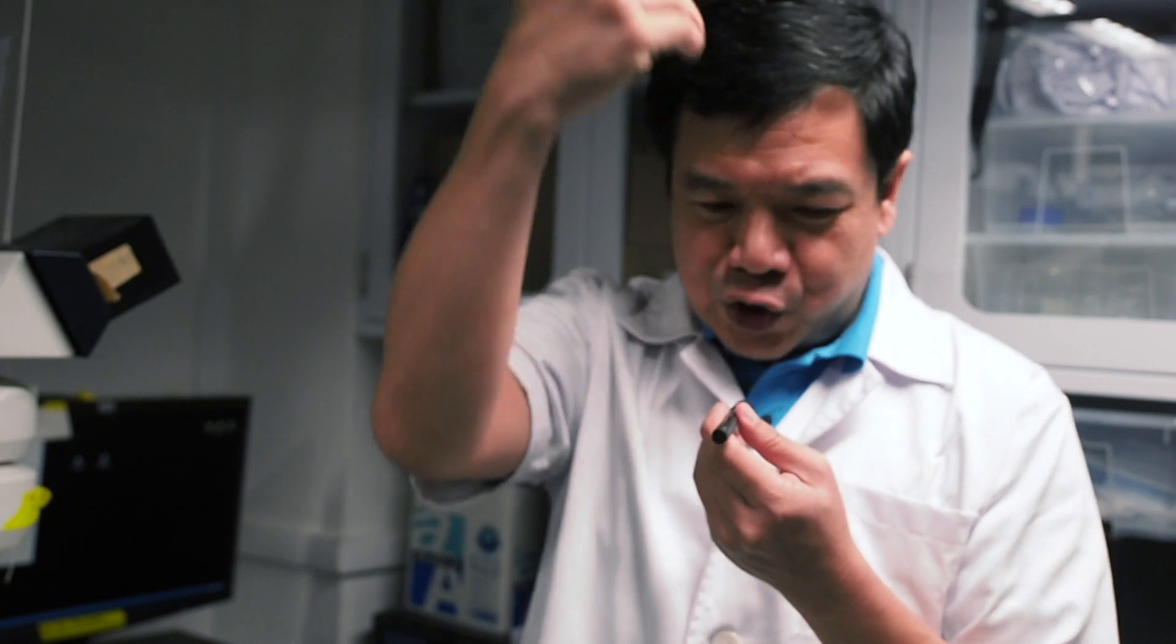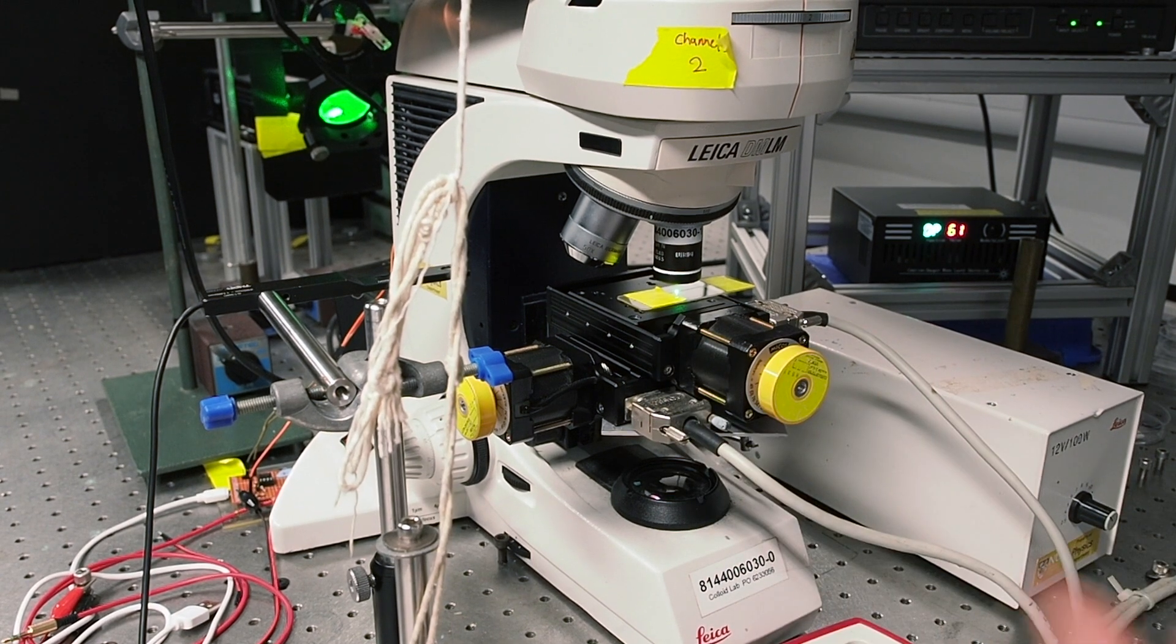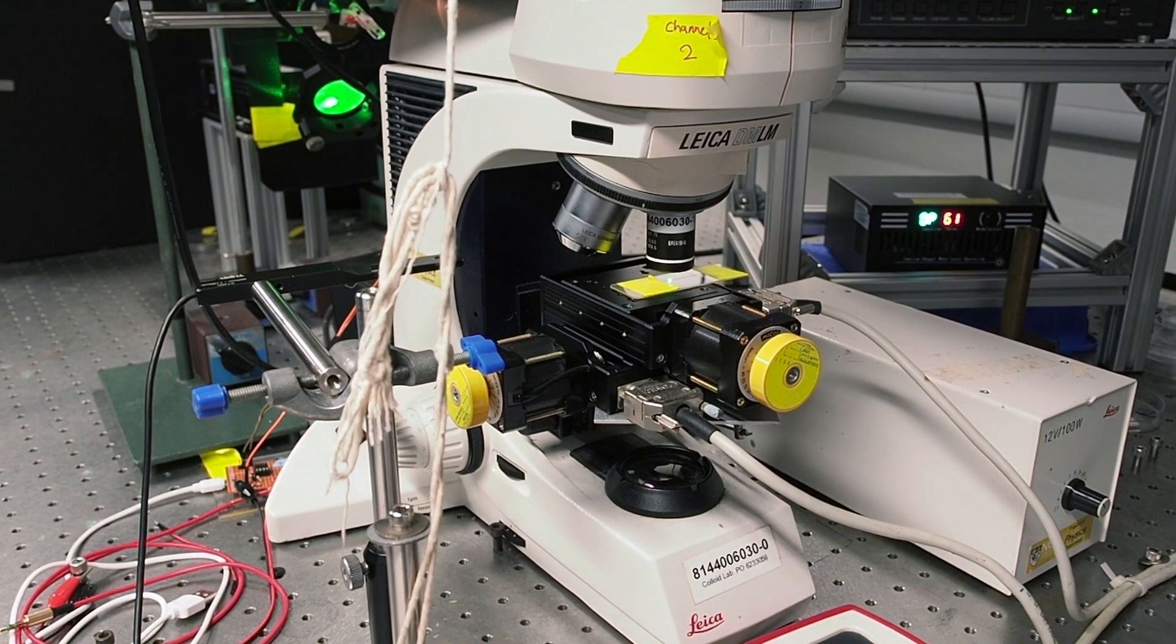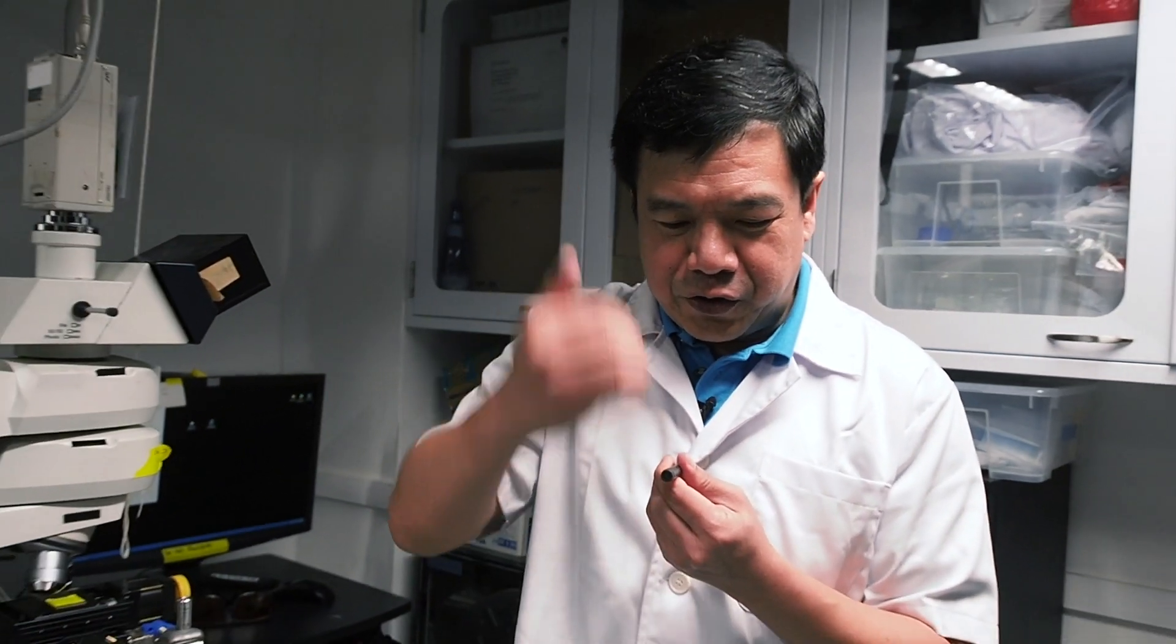Imagine you have a super knife and you slice the cross section of human hair one time - you get two pieces. Now imagine you have a fresh piece of human hair and you do this 99 times, then you'll get 100 pieces.